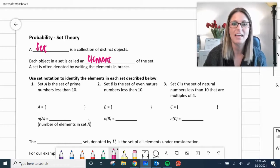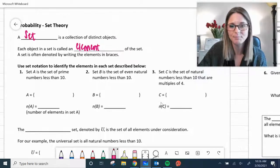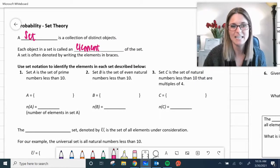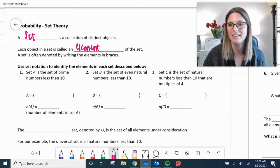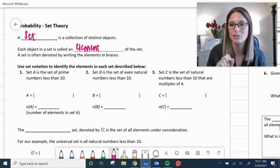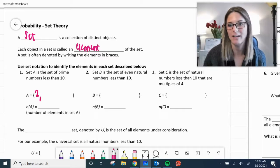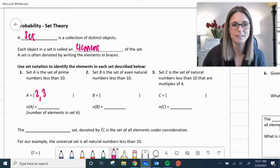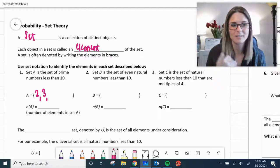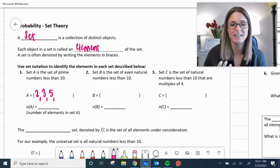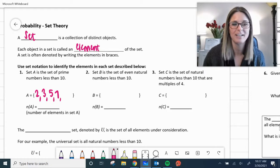So use set notation to identify the elements in each set described above, and you have three examples here. Let's look at them. Number one, set A is a set of prime numbers less than 10. So remember, prime numbers are numbers whose factors are one and itself, and then we're just looking at those that are less than 10. So like 2 has factor 1 and 2, 3, not 4, 5, not 6, 7, 8, not 9, not 10. So those are only 2, 3, 5, and 7.